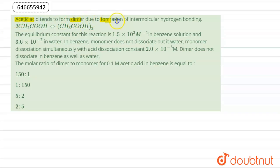Acetic acid tends to form dimer due to formation of intramolecular hydrogen bonding as two CH3COOH molecules giving dimer (CH3COOH)2. The equilibrium constant for this reaction is 1.5 × 10² per molar in benzene solution and 3.6 × 10⁻² in water. In benzene, monomer does not dissociate, but in water, monomer dissociates simultaneously.